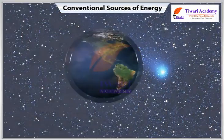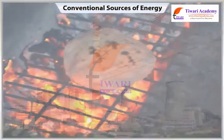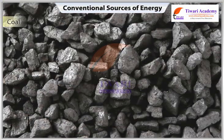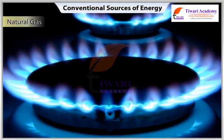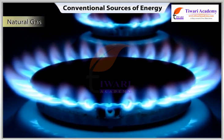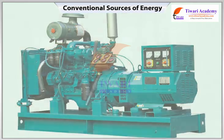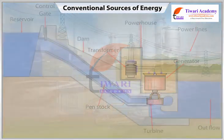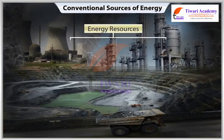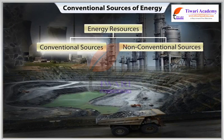The most sought-after forms of energy are electricity and heat energy. Fuel minerals like coal, petroleum, and natural gas are burned to produce heat energy, which is used to run machines or generate electric energy. Electric energy can also be generated from uranium and running water. Energy resources can be classified as conventional and non-conventional sources.